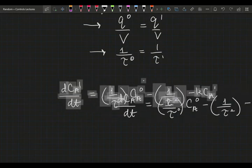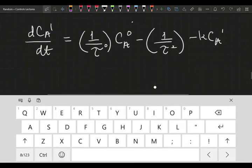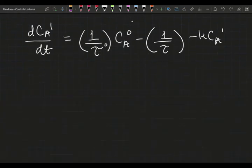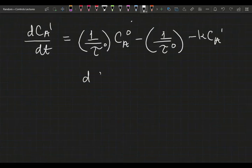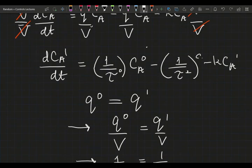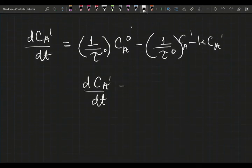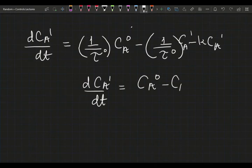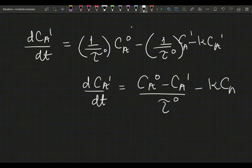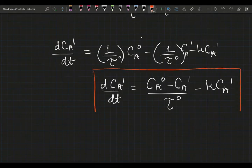And now, I'm just going to rewrite this one as zero, which means that everything can be rewritten as... There was a C_A1 here that I did not catch. Anyway, we got it. So, we have C_A0 minus C_A1 over tau zero minus KC_A1. So that's our equation for the dynamics of the first CSTR.